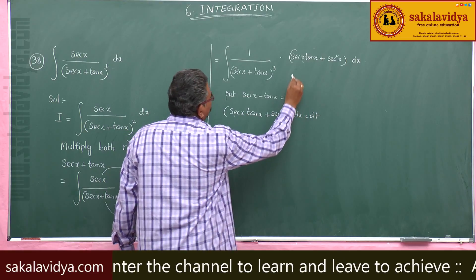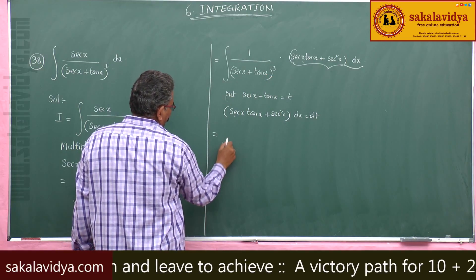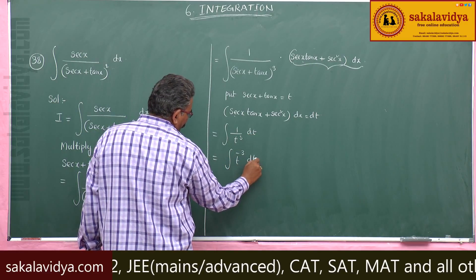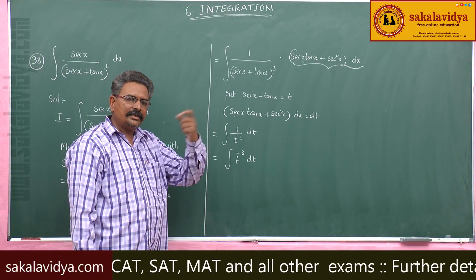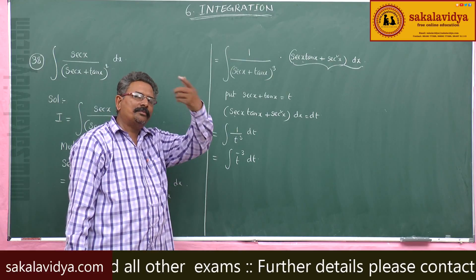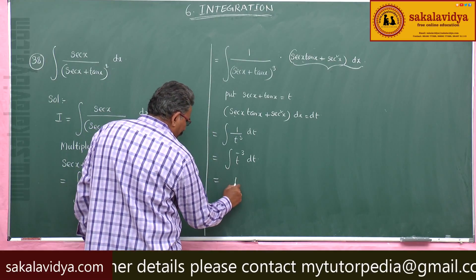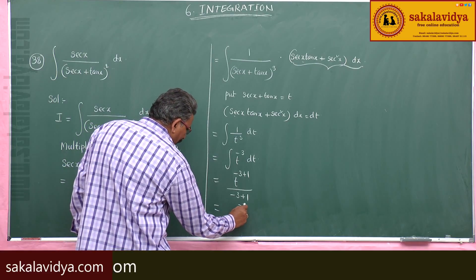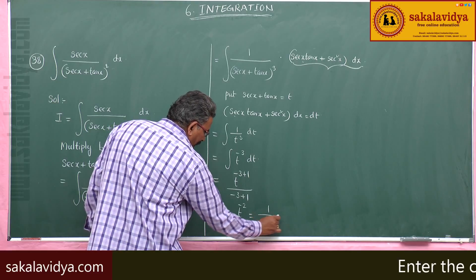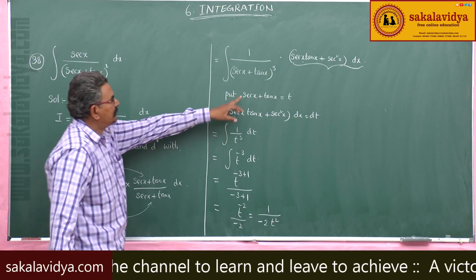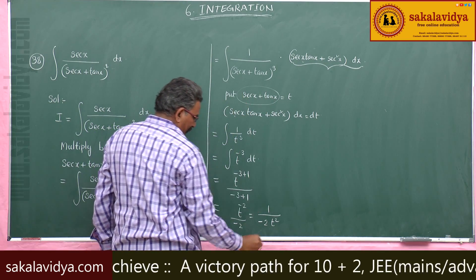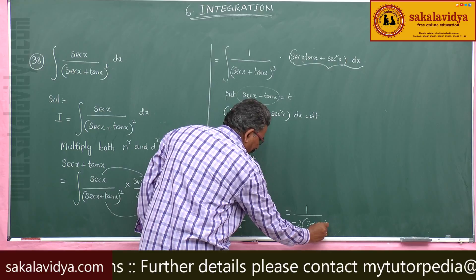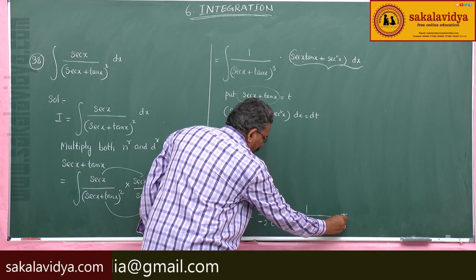This becomes dt, and the expression simplifies to the integral of 1 over t cubed dt, which is the integral of t to the power minus 3 dt. Using the formula for the integral of x to the power n, which gives x to the power n plus 1 over n plus 1, we get t to the power minus 2 over minus 2, which equals 1 over minus 2 t squared. Since t equals sec x plus tan x, the final answer is minus 1 over 2(sec x plus tan x) squared plus a constant of integration.